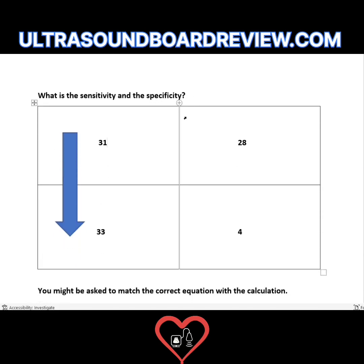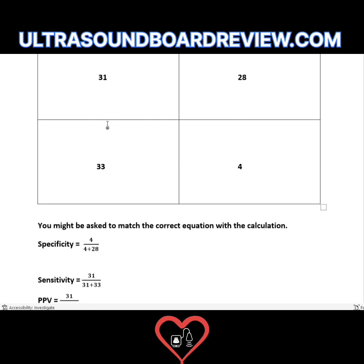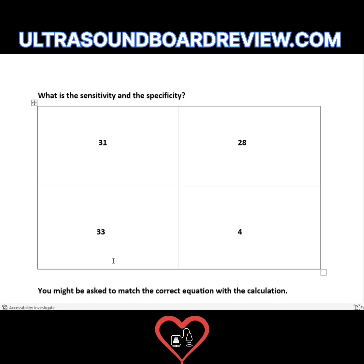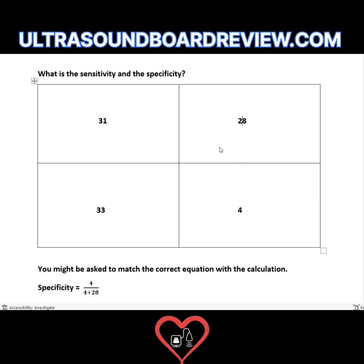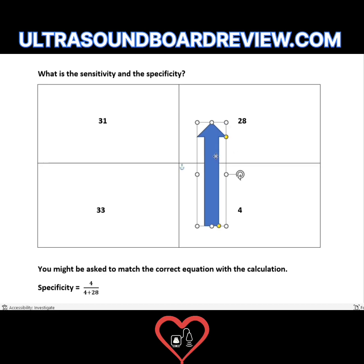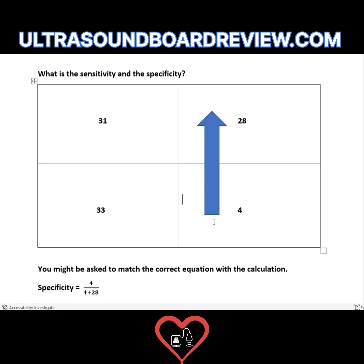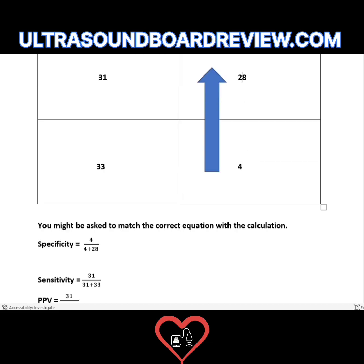What's specificity? Sensitivity is the ability of a test to accurately diagnose a patient with disease — the positive. Specificity means the test accurately diagnosed the patient with negative results — the test was correct to say they're negative. The equation for specificity is D divided by D plus B. Draw the arrow starting at D. The equation will be 4 divided by 4 plus 28. So specificity: 4 divided by 4 plus 28.